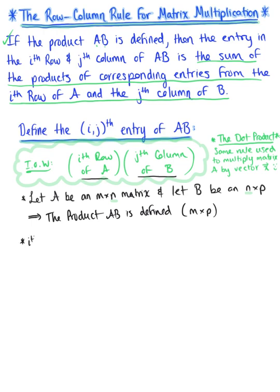We have the i-th row of matrix A, which we define as vector A sub i. This is a row vector whose entries are defined as the entry in the i-th row, first column; the entry in the i-th row, second column; and so on, all the way to the entry in the i-th row, n-th column.